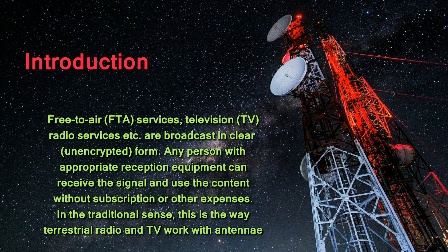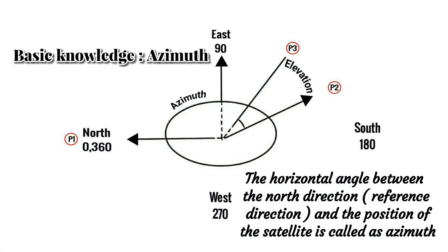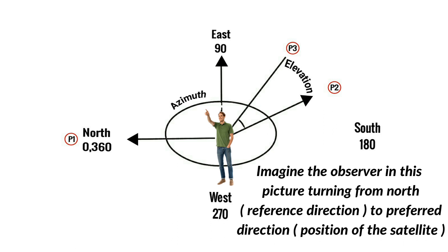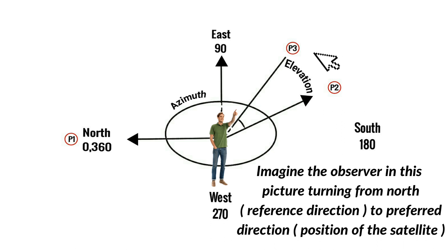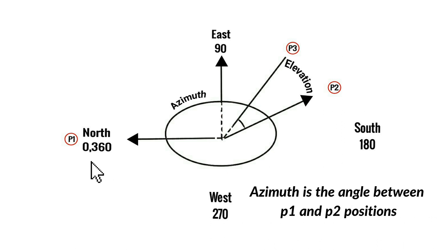Basic knowledge — Azimuth: The horizontal angle between the north direction (reference direction) and the position of the satellite is called the azimuth. Imagine an observer turning from north to the preferred direction — the position of the satellite. Azimuth is the angle between positions P1 and P2.